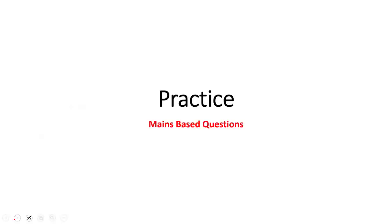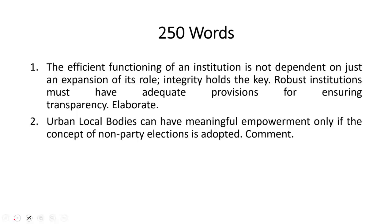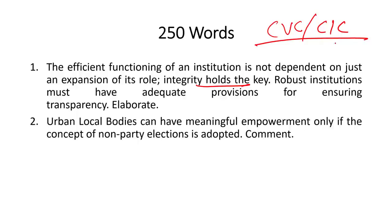Mains practice questions: (1) The efficient functioning of an institution is not dependent on just an expansion of its role — integrity holds the key. Robust institutions must have adequate provisions for ensuring transparency. Elaborate. (This relates to the discussion on CVC and CIC.) (2) Urban local bodies can have meaningful empowerment only if the concept of non-party elections is adopted. Comment. That is it from our newspaper analysis for today. Thank you and have a great day.